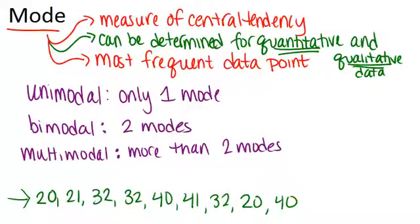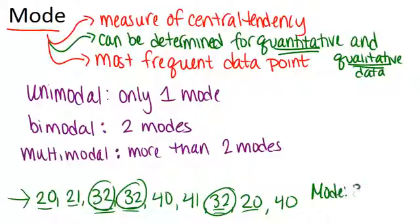So as you look through I noticed there are two different 20s, only one 21, three 32s, two 40s, and one 41. So that means 32 wins because there are three 32s. So the mode would be 32. So that's the number that appeared most often in the data set.